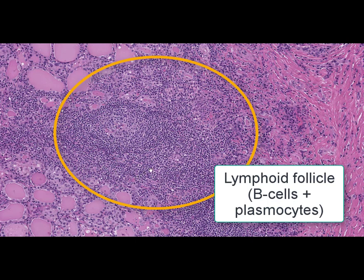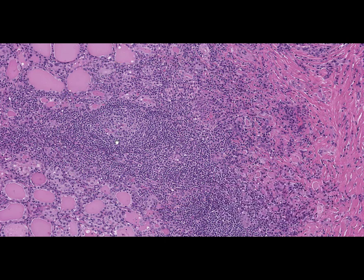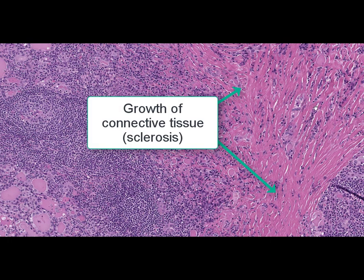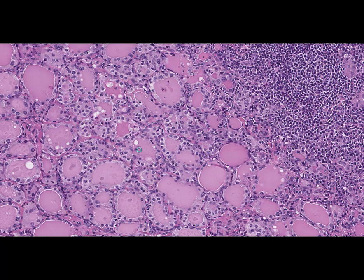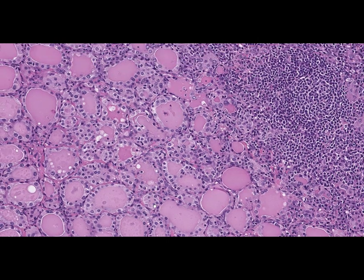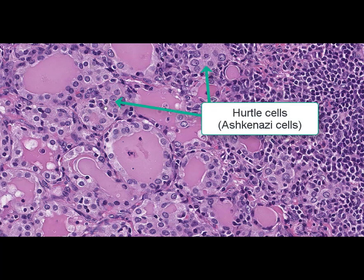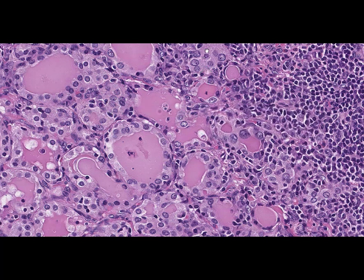As a result of thyroid parenchyma lesions, replacement by connective tissue can be seen, with foci of sclerosis and fibrous tissue replacement. Also, regeneration of epithelium and epidermoid metaplasia takes place in follicles, where Hurthle cells, also called Ashkenazi cells, can be seen. These morphological changes lead to a considerable decrease in hormone production, meaning very pronounced and severe hypothyroidism.